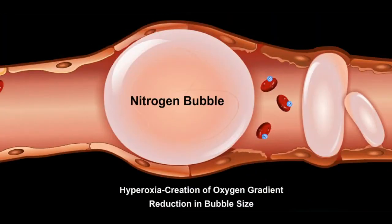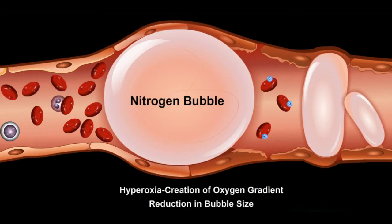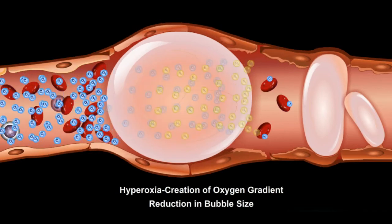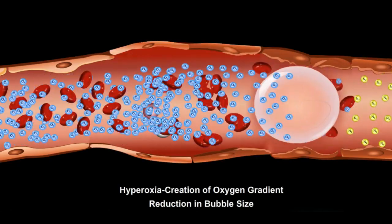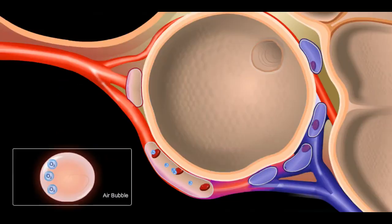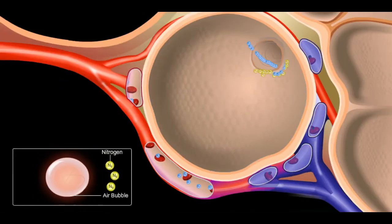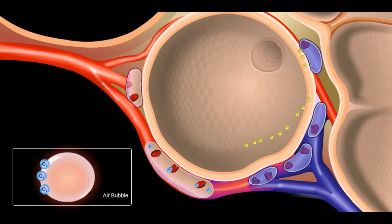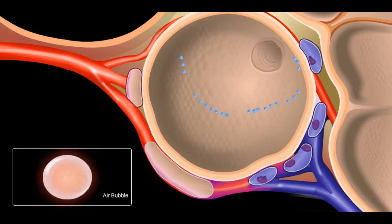Nitrogen appears as a bubble in your blood vessels and obstructs the movement of blood and its components. Hyperbaric therapy increases the oxygen concentration in the blood vessels, forcing the nitrogen out of the bubble and effectively reducing its size. The nitrogen bubble is then eradicated from the body through the lungs during breathing. A similar effect is obtained when treating bubbles present in an air or gas embolism.